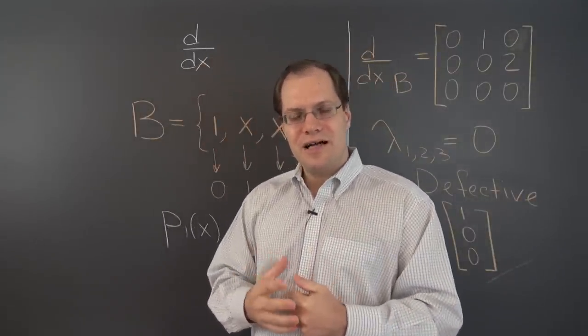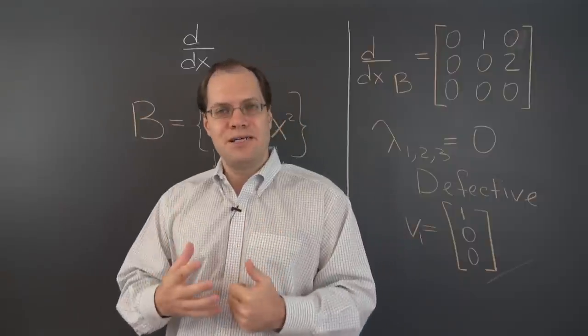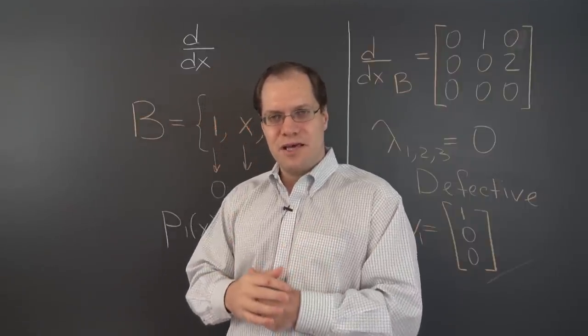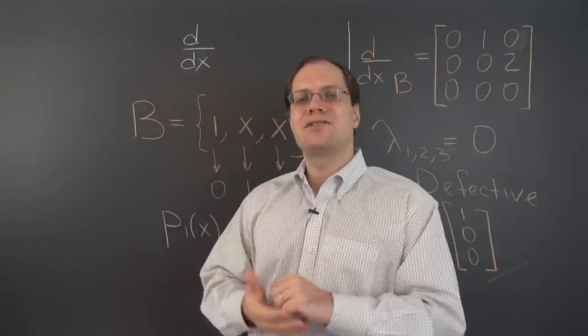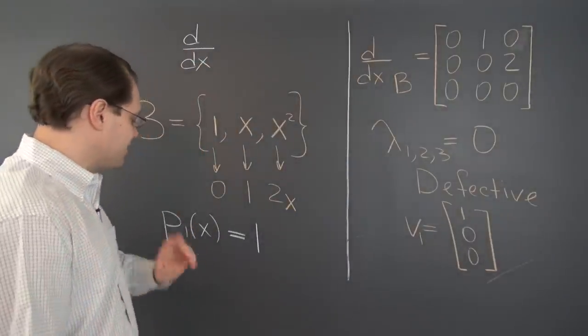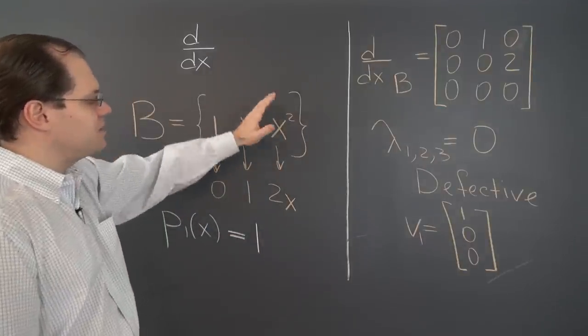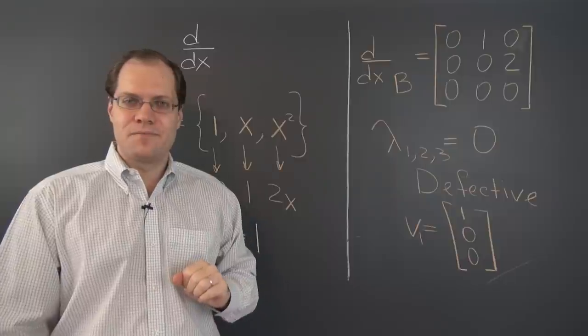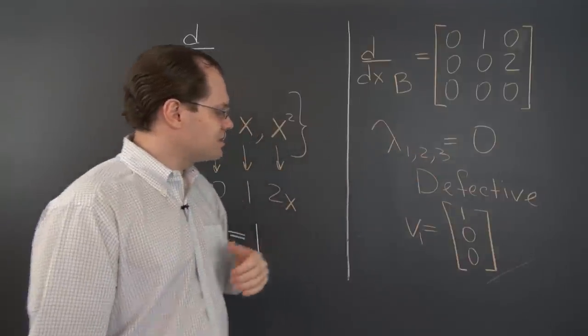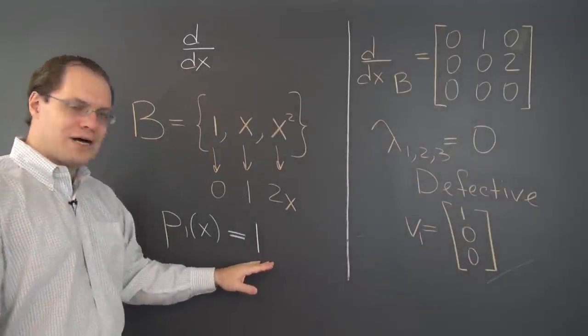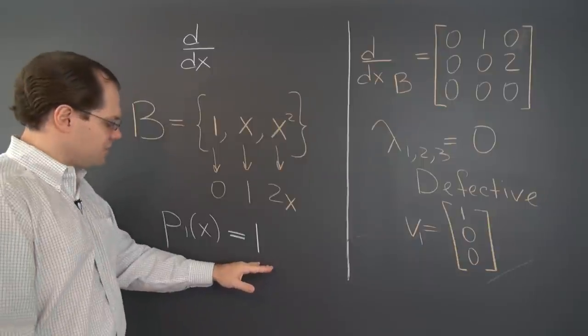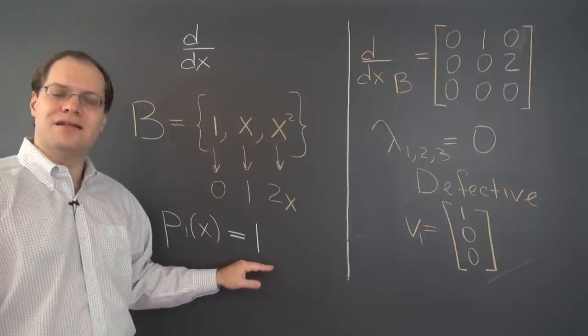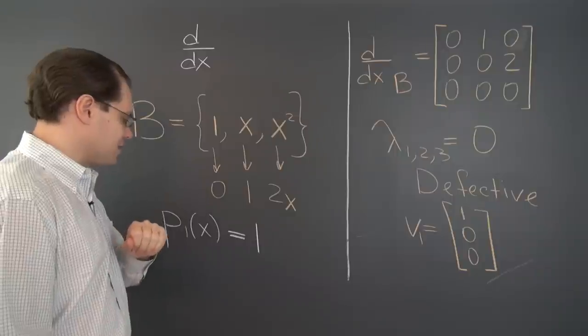And zero is the eigenvalue whose algebraic multiplicity equals the dimension of the space, and it lacks all but one eigenvector. So on an n-dimensional space of polynomials, the multiplicity of this operator is n, and the defect equals n minus 1, all but one dimension missing from the eigenspace. There is a single eigenvector and that's the constant operator.